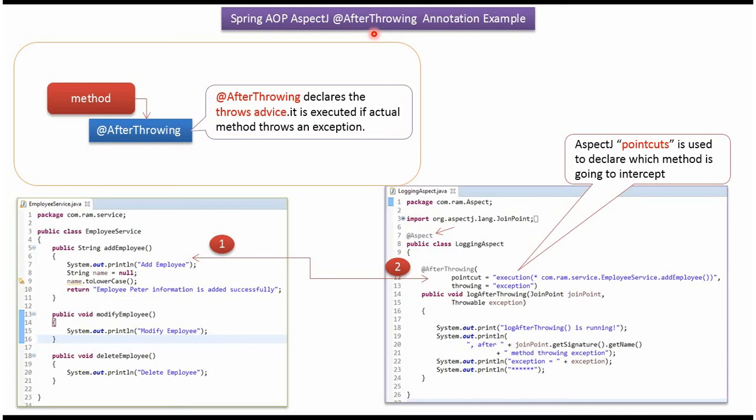This video tutorial will explain AspectJ @AfterThrowing annotation example. @AfterThrowing annotation declares the throws advice. Throws advice will be executed if the actual method throws an exception.